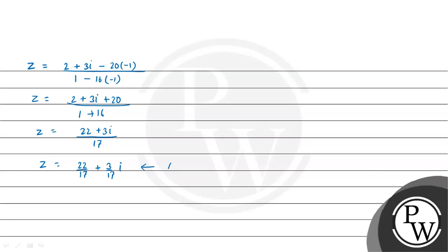So we can write 22 divided by 17 plus 3 divided by 17 iota. Now we can express this in a plus ib form. So on comparing, we will get a equals 22 divided by 17, and b equals 3 divided by 17. The final answer in a plus ib form is 22/17 plus iota 3/17.